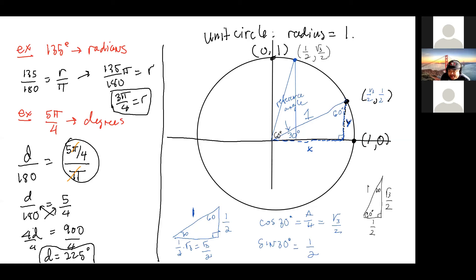The unit circle is a tool that allows us to figure out the sines and cosines of particular angles. Without a calculator — before calculators existed — this unit circle was actually used. They knew the cosine of 30 degrees immediately: it's root three over two. The problem with the unit circle is it's confined to particular degrees — only special right triangle degrees.